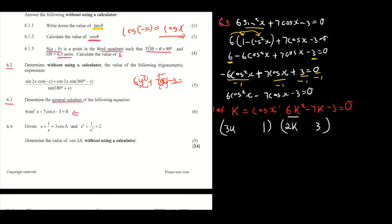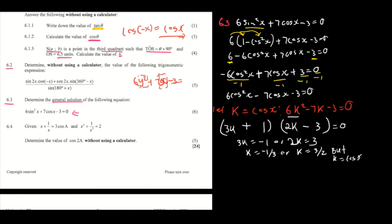So you get: 3k equals negative 1, or 2k equals 3, meaning k equals negative 1/3 or k equals 3/2. Since k equals cos x, that means cos x equals negative 1/3 or cos x equals 3/2.